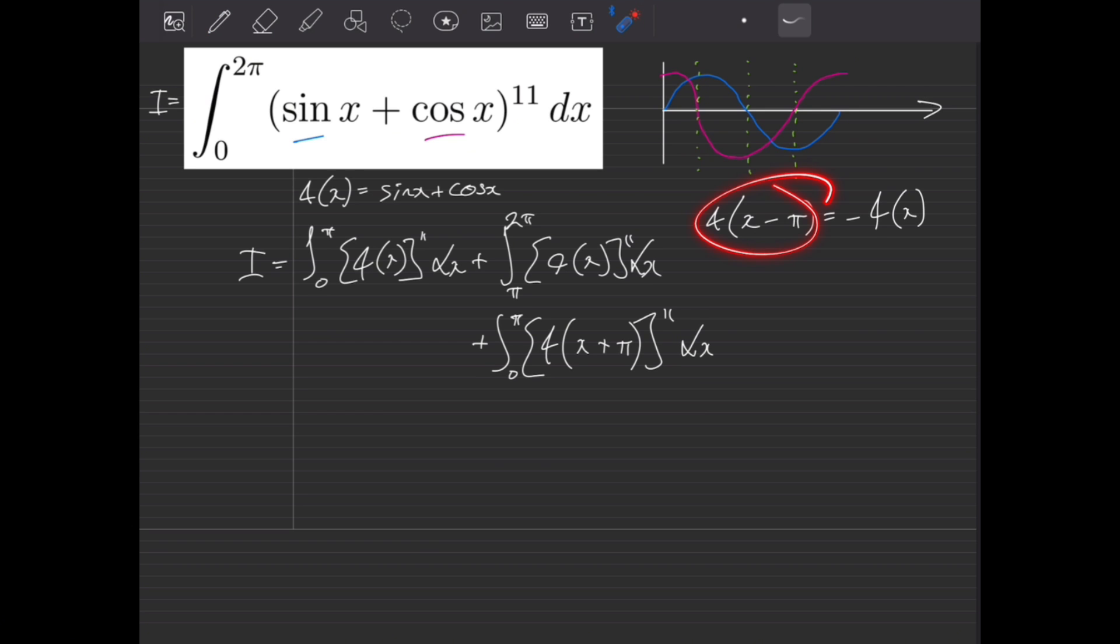Now then, this isn't quite the same as what we've got over here, but luckily both of the functions repeat every 2 pi. So what we can say, as long as there's a difference of 2 pi within our operand, they are the same, or i.e. this is also equal to f of x plus pi.